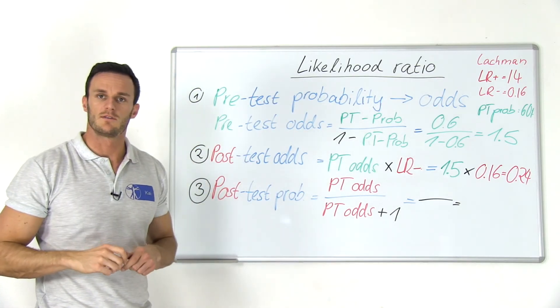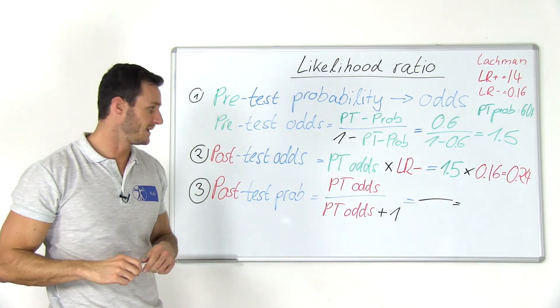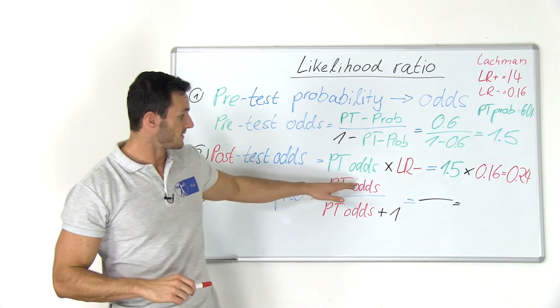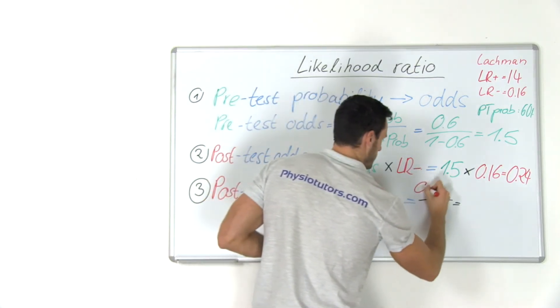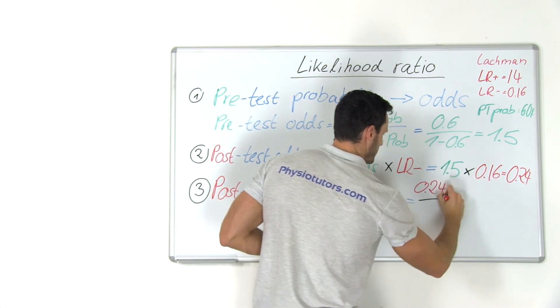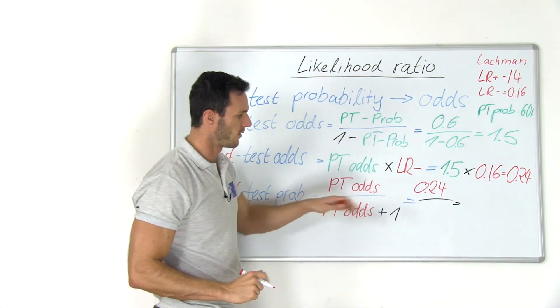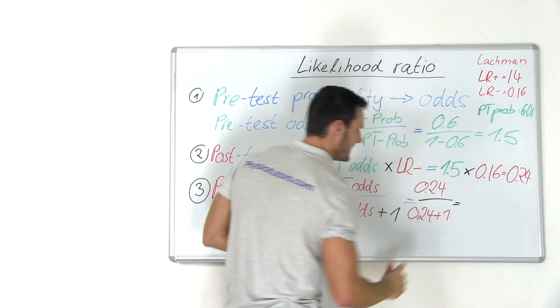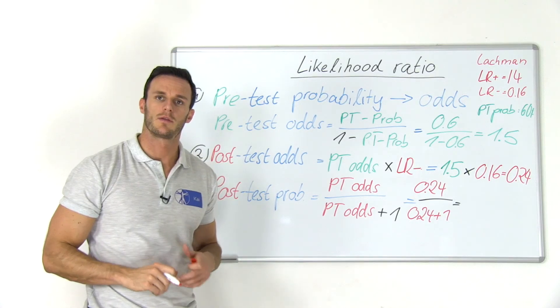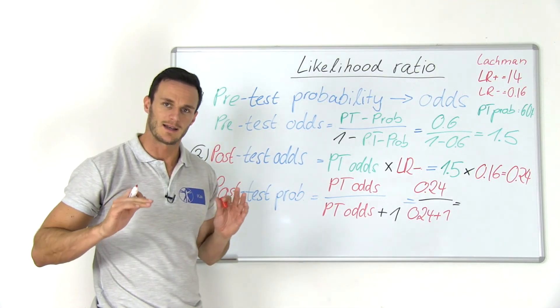Again, we have to convert this value back into a probability. So in this case, it's the post-test odds, so 0.24 divided through 0.24 plus 1. And then we're going to end up with 0.19, which is 19% post-test probability.